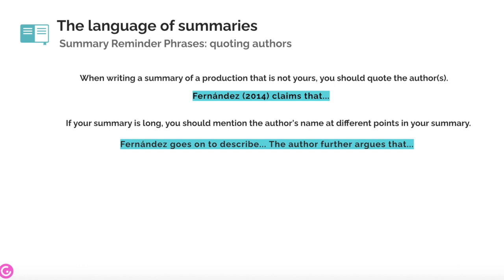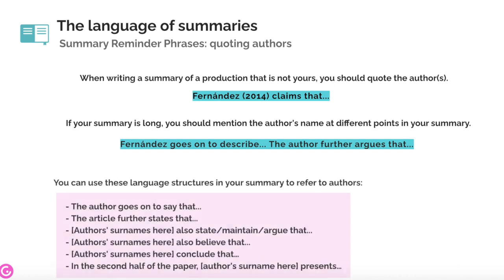In fact, if your summary is too long, you may want to mention the author's name at different points in your summary. When you mention the author in the middle or the end of your summary, be sure you use only the surname. For example, Fernandez goes on to describe, or the author further argues that. You can also use these language structures in your summary to refer to the authors.